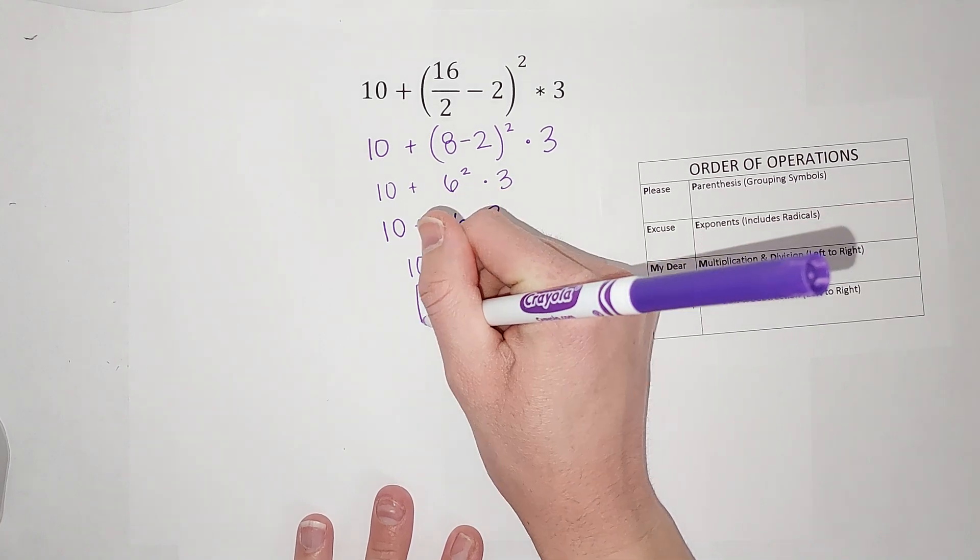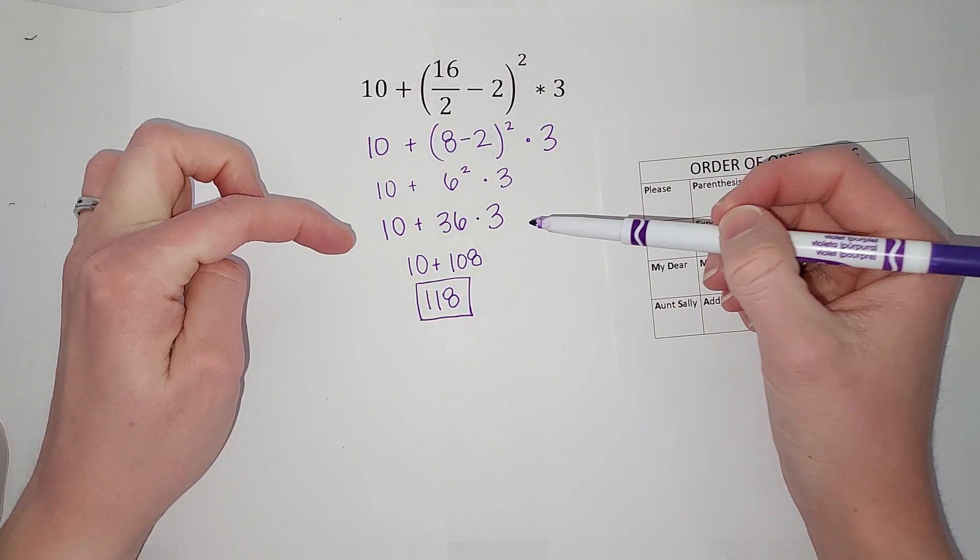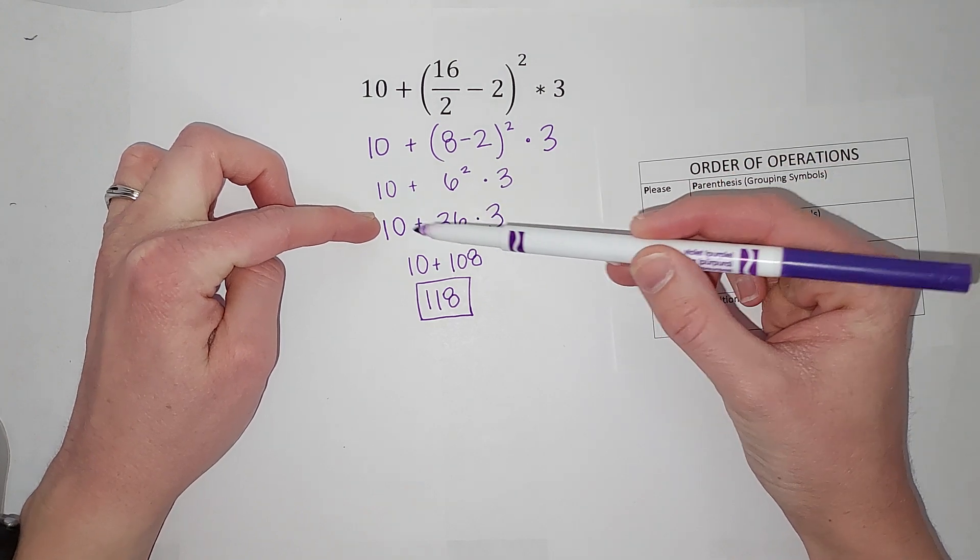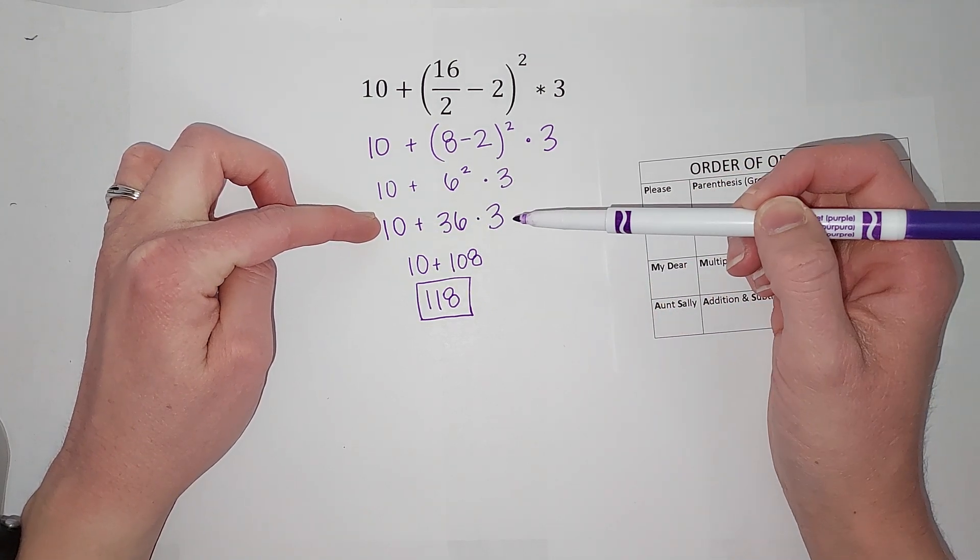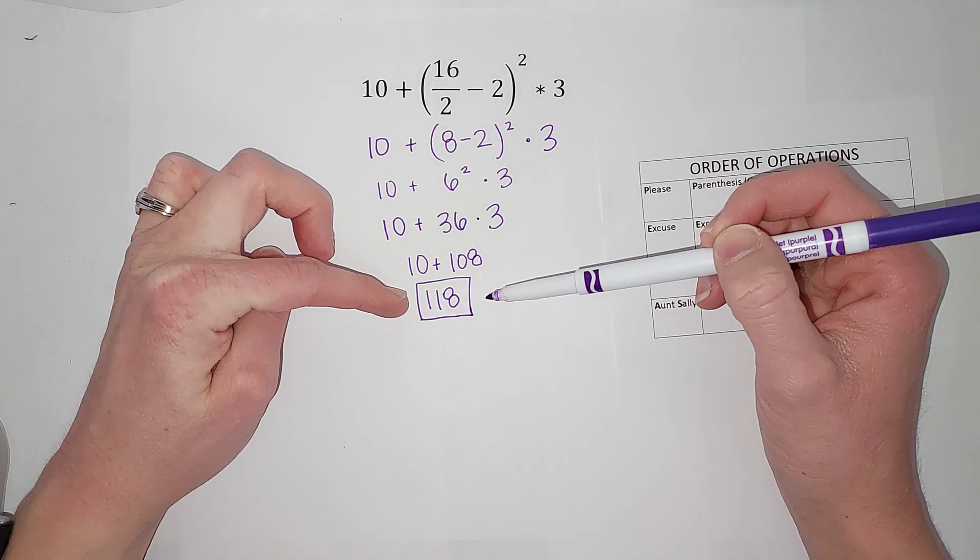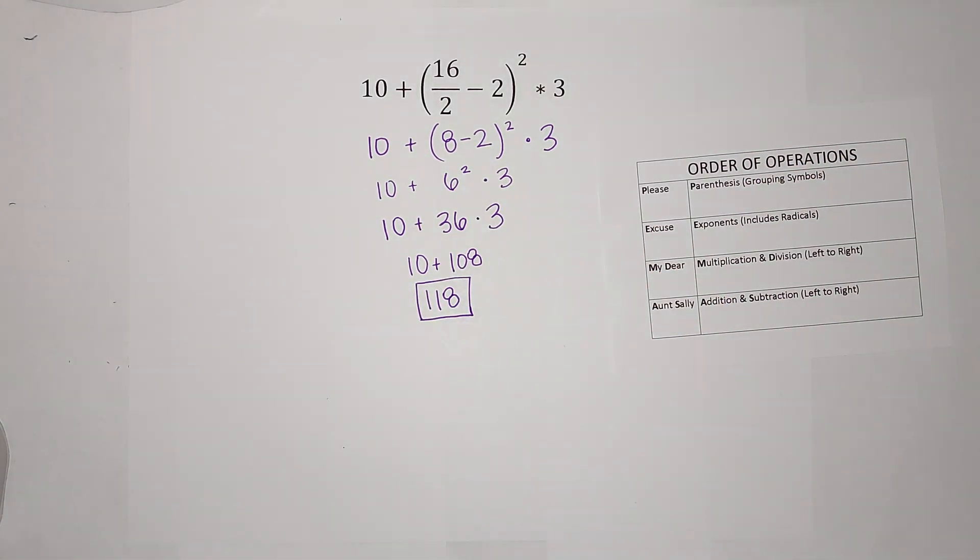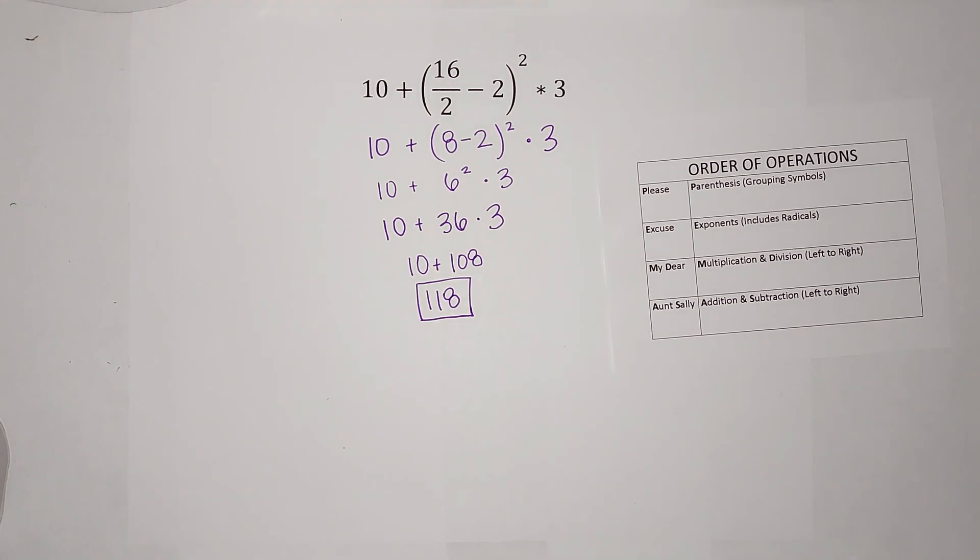Just as a quick thing, look at this step here. If I had added first and gotten 46 and then multiplied, I definitely wouldn't have gotten 119. That is why we have this, so that we all get the same answer. Hopefully that made sense. Bye bye.